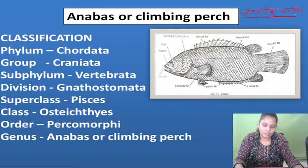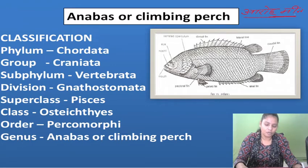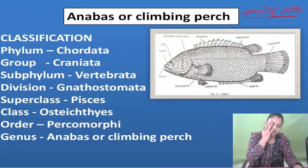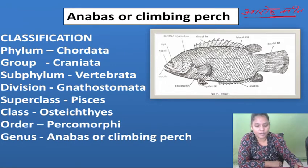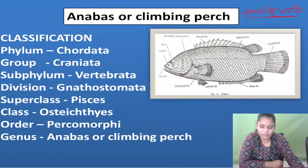Vertebrata — kashiruk dhanda. Division is Gnathostomata (jabade wali), meaning those with jaws. Super class — all fish species are placed within Pisces. Class Osteichthyes includes fishes whose internal skeleton is made of bone (hasti). Then we talk about Percomorpha.